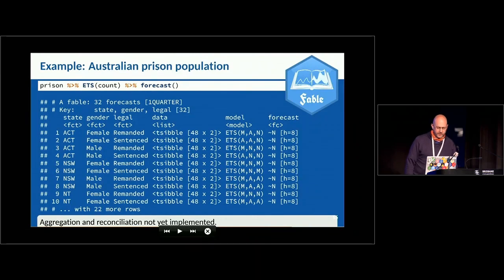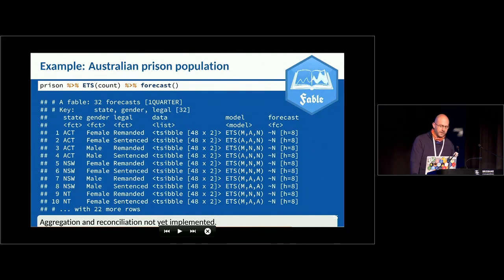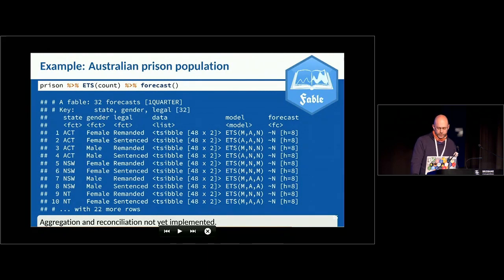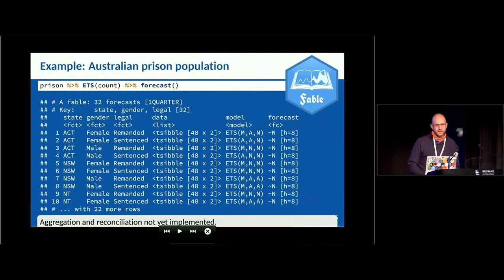The next step — not yet implemented — is aggregation and reconciliation. A typical issue in forecasting is that you want forecasts for all combinations but also for aggregates like each state, each gender, and each legal status separately, and you want those forecasts to add up appropriately. We will be adding that functionality. For those familiar with my HTS package, that will be rolled in here as basically a single line: here's my collection of forecasts, please reconcile them.